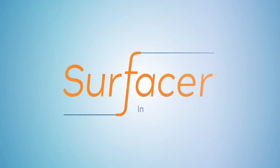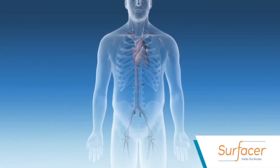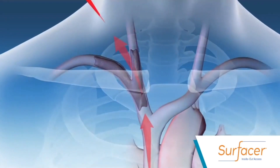The Surfacer Inside-Out Access Catheter System is a novel approach to gaining venous access from the inside out. The operator navigates the Surfacer from the femoral vein and exits via the venous vasculature.